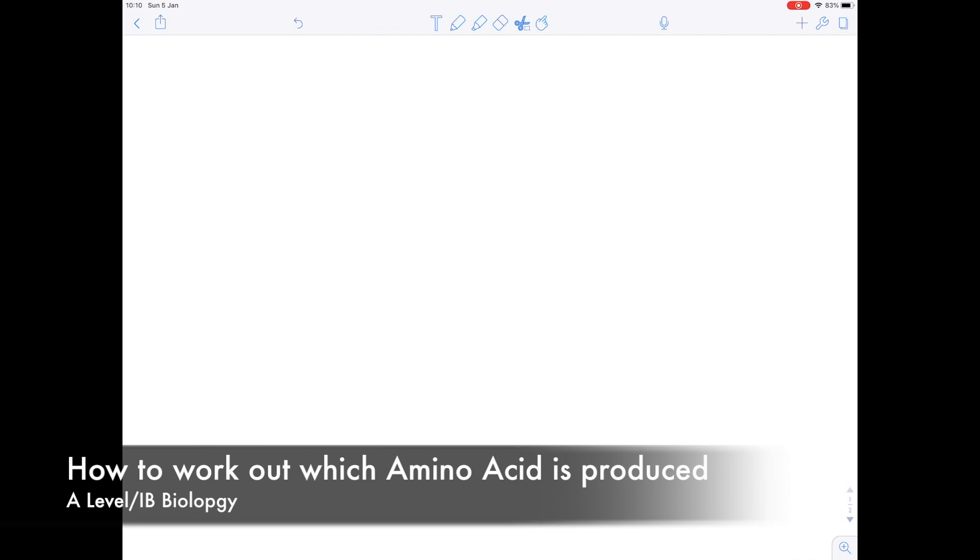In this A-level IB Biology video, it's a very specific video where I show you how you can work out which amino acid you get based on three bases or a codon. Make sure you watch my other videos if you're not quite sure what I'm talking about. Just as a little summary though, what this video is really about is the genetic code.